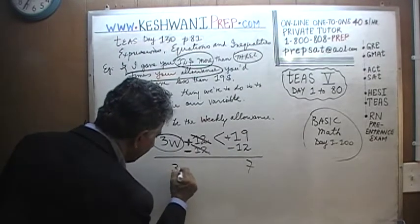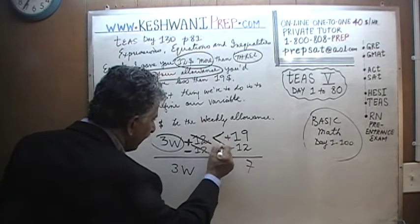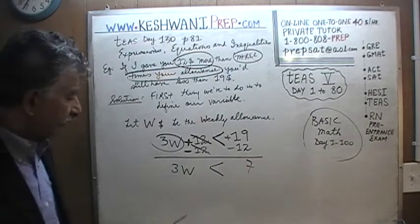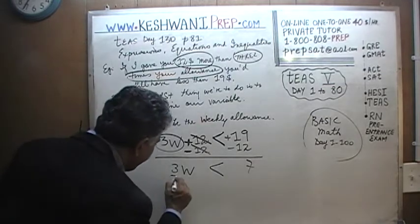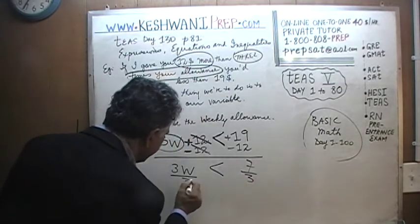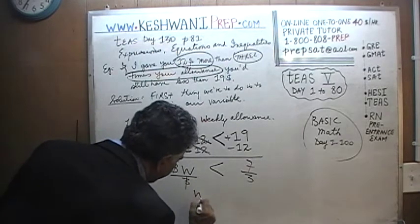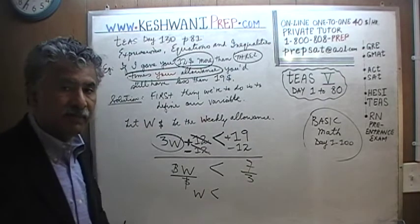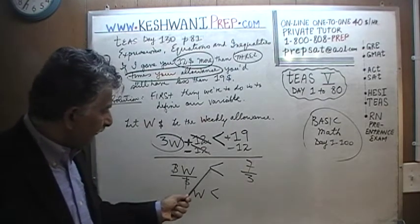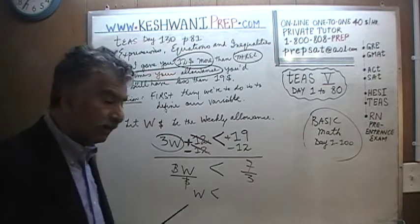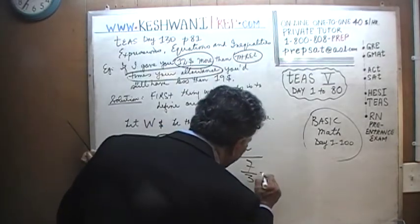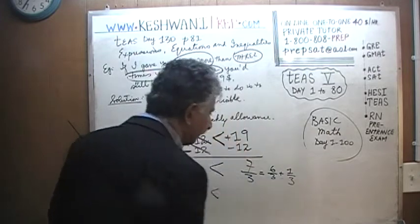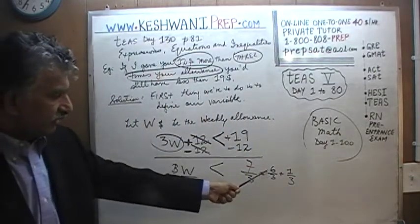Now let's divide both sides by 3 so we can have w by itself. The 3's cancel out, and this tells us that the weekly allowance w is less than 7 thirds. Whatever my weekly allowance is, it is less than 7 thirds. Now, 7 thirds we know is simply 6 thirds plus 1 third.